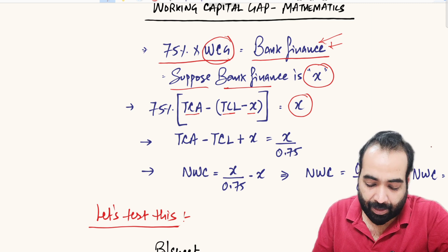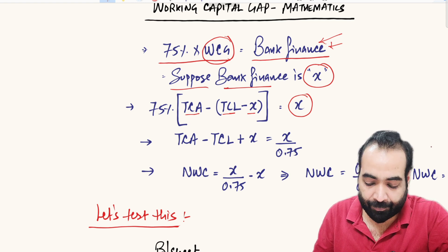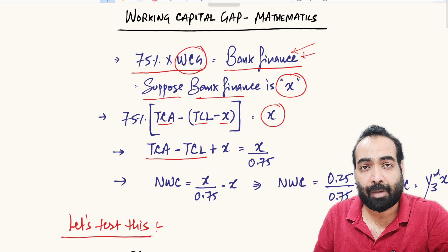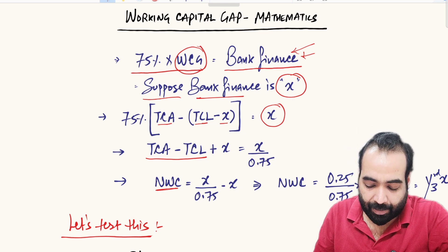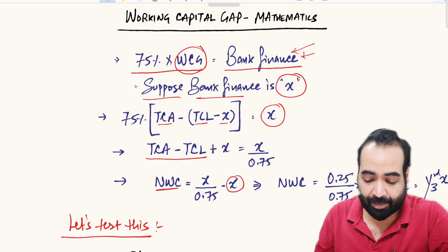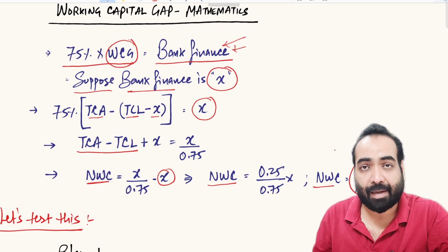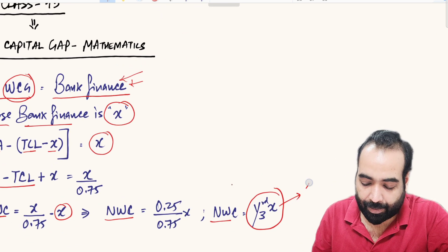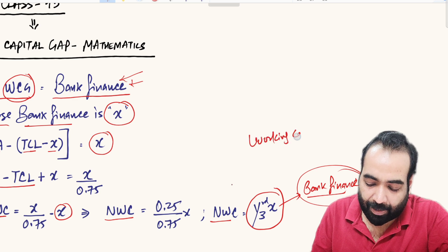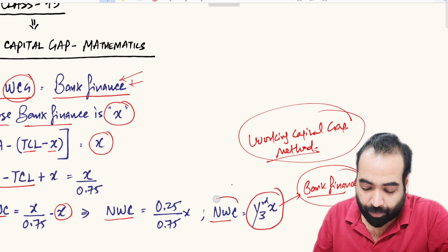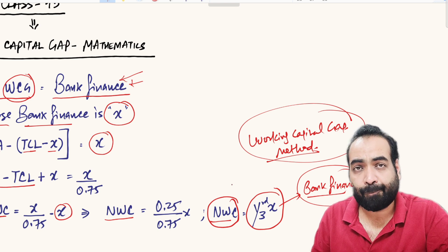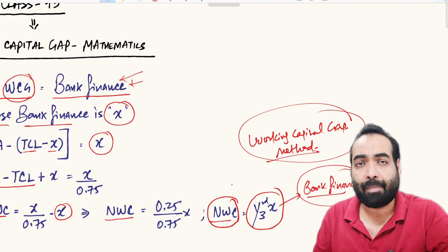If we open up the parentheses, we get: X / 0.75 = TCA minus TCL plus X. Now, TCA minus TCL — Total Current Assets minus Total Current Liabilities — is Net Working Capital (NWC), as discussed in previous videos. Solving further, NWC = X − X/0.75, which simplifies to NWC = one-third of X. So under Working Capital Gap Method (Method 1 of the Tandon Committee), your eligibility is met if your NWC is one-third of your bank finance.